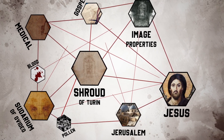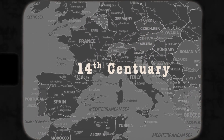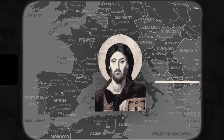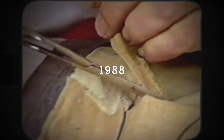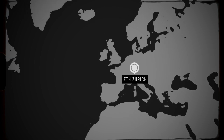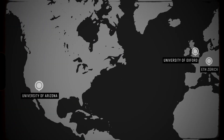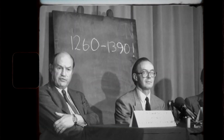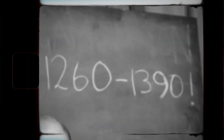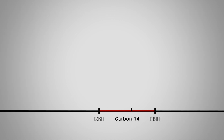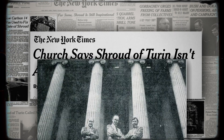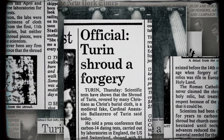Upon the Shroud's mysterious appearance in 14th century Europe, the church was determined to confirm its authenticity and establish whether it could be traced back to the time of Jesus. So in 1988, a piece of sample was cut from the corner of the Shroud and sent to three different laboratories for carbon dating. The outcome was devastating, as the results revealed a date range between 1260 AD and 1398 — a full thousand years after the death of Jesus — around the same time it appeared in European records. The media rushed to make headlines around the world that the Shroud of Turin is a medieval forgery.